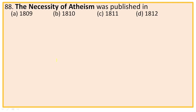Question 88: 'The Necessity of Atheism' was published in — options: 1809, 1810, 1811, 1812. We know that Shelley was expelled from Oxford in 1811 because he published a pamphlet called 'The Necessity of Atheism.' So the right option is C, 1811.